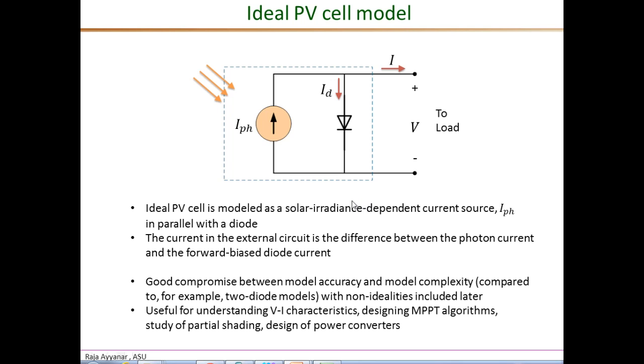Now this is not a perfect model, but this is a good compromise between model accuracy and model complexity. Now there are several other PV cell models, those involving for example two diodes. But the one that we are going to use, the single diode based model, as I said represents for our requirements, the best compromise between accuracy and complexity. Especially when we include some of the non-idealities, the parasitic series and shunt resistance in later slides of this video.